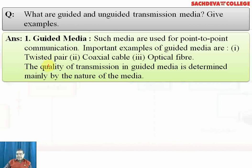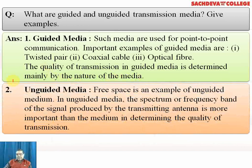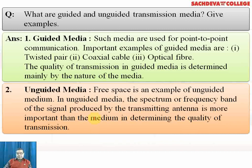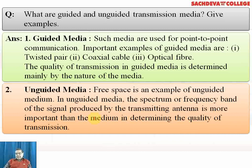The quality of transmission in guided media is determined mainly by the nature of the medium, and refractive index plays a very prominent role. Unguided media refers to free space — either air or vacuum. Air has very low density of 0.001293 grams per centimeter cube, which is almost a partial vacuum. In unguided media, the frequency band of the signal produced by the transmitting antenna is more important than the medium in determining transmission quality.